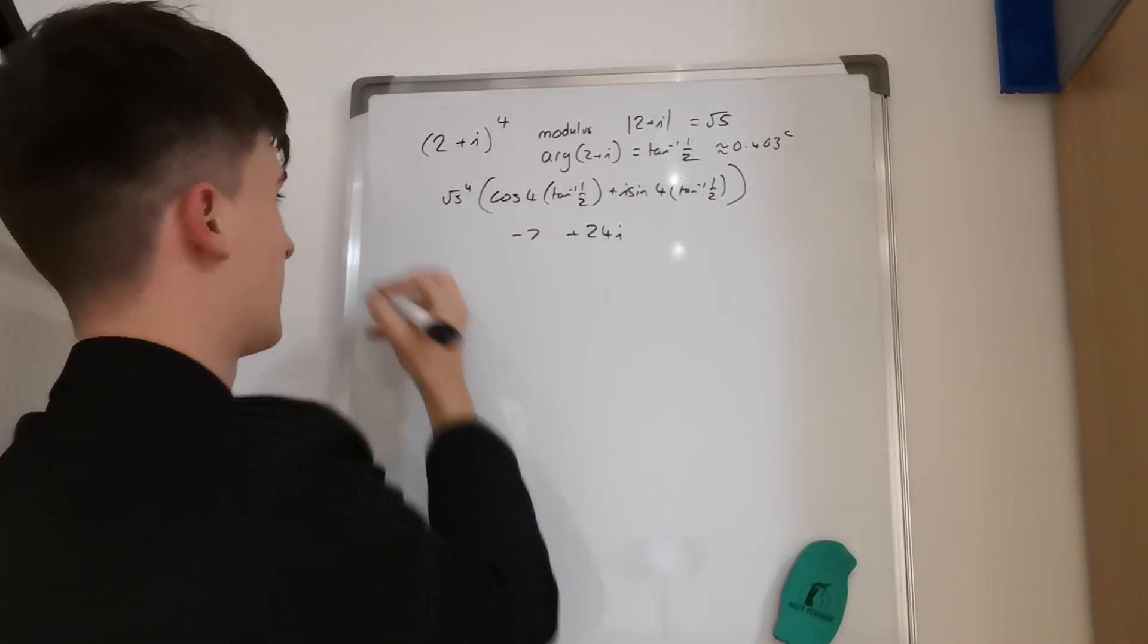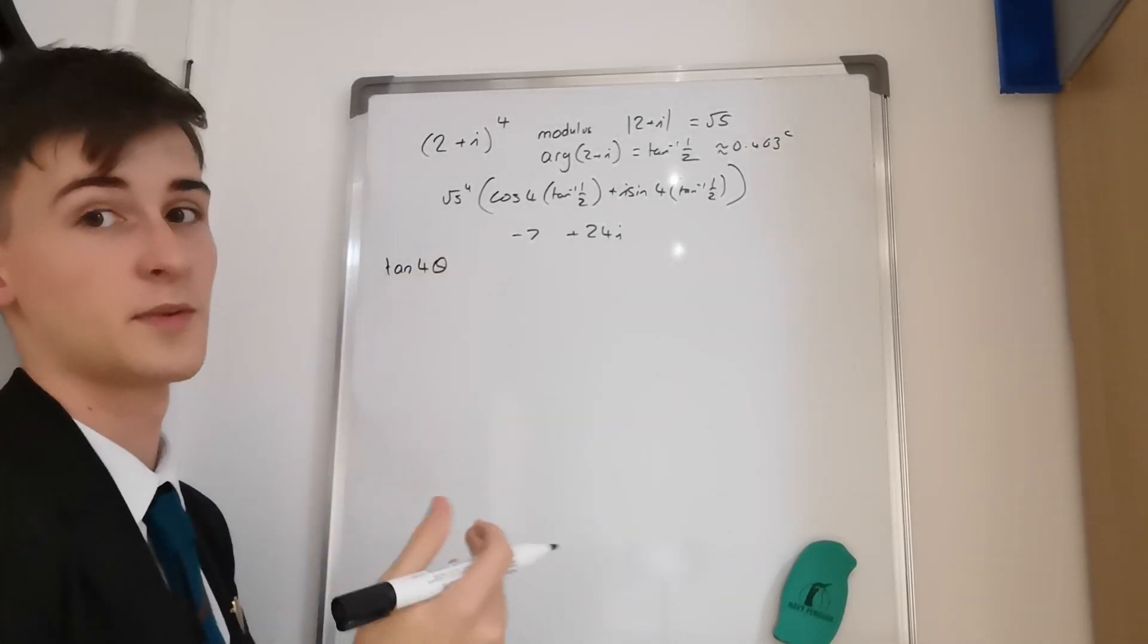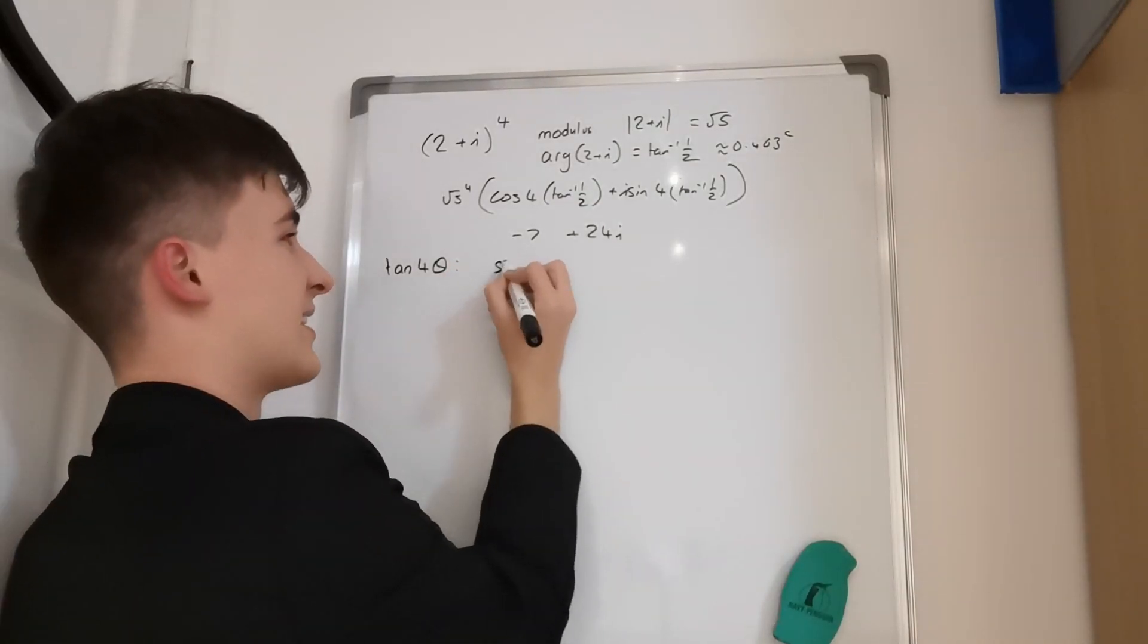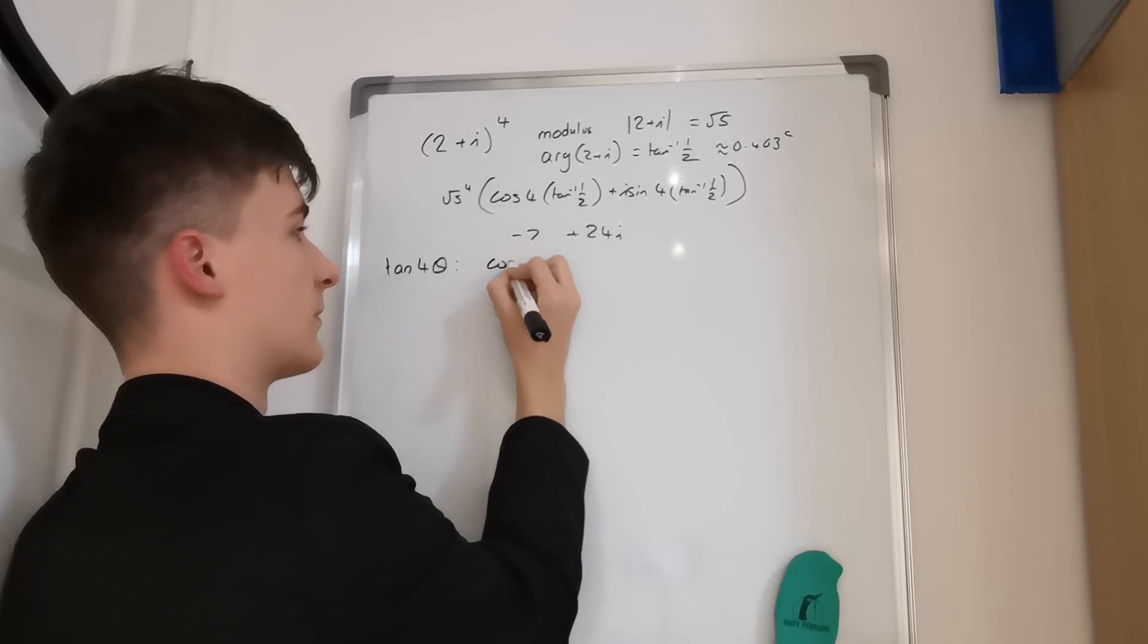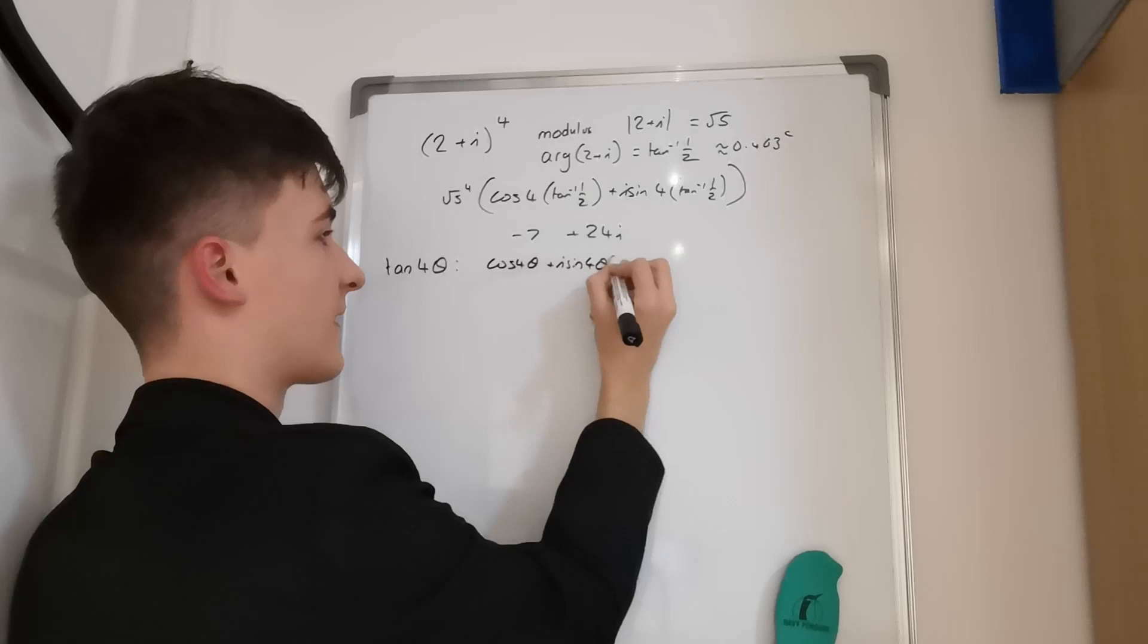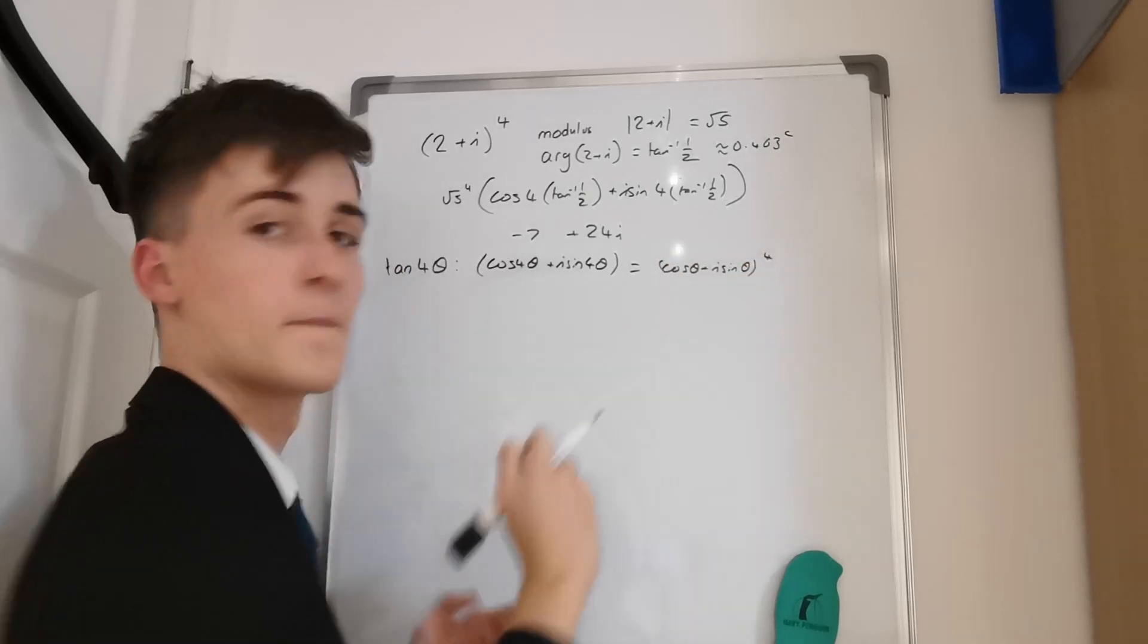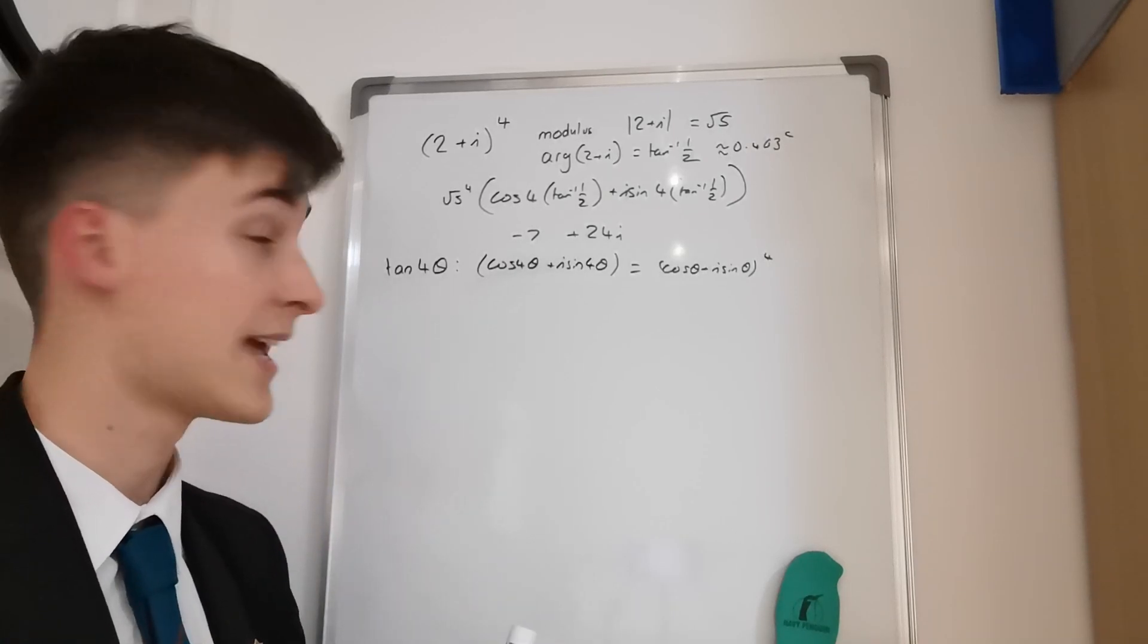Then you had to prove, or then you had to basically work out what tan(4θ) is in terms of tan(θ). And this is a weird question but we're going to start by saying that cos(4θ) + i sin(4θ) is equal to (cos(θ) + i sin(θ))^4. And now for an expansion but we're going to change the angle a little bit because this expansion is long.